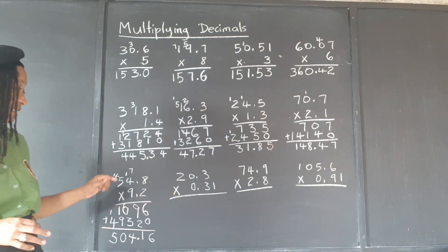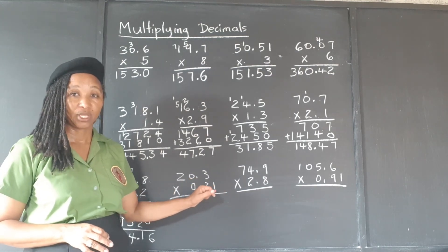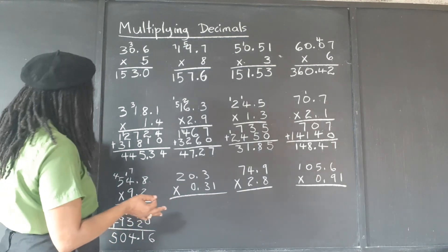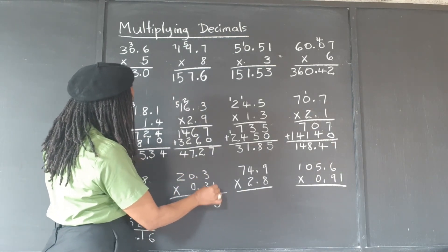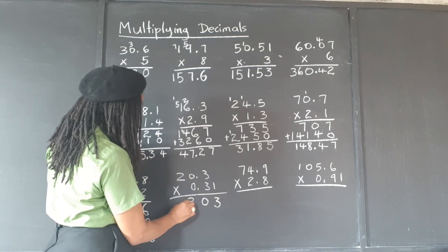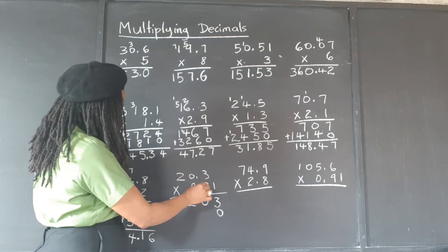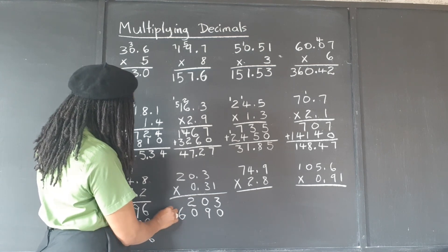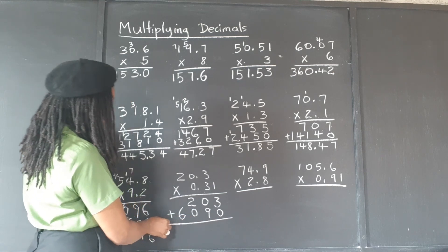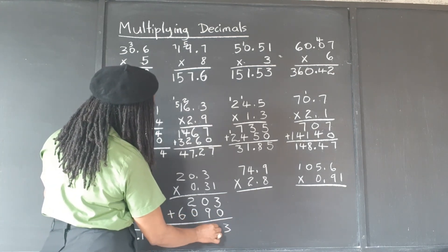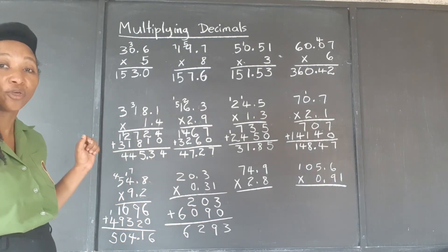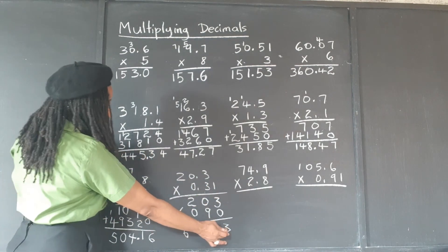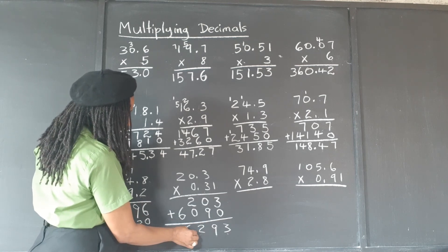Now we're multiplying and we realize we have 1 decimal place up here and 2 down here — that's 3 in all. So our answer is going to have 3 decimal places. 1 times 3 is 3. 1 times 0 is 0. 1 times 2 is 2. Put our placeholder. 3 times 3 is 9. 3 times 0 is 0. 3 times 2 is 6. Now we add: 3 plus 0 is 3. 0 plus 9 is 9. 2 plus 0 is 2, and 6. We put 3 decimal places — 1, 2, 3. So the answer is 6.293.